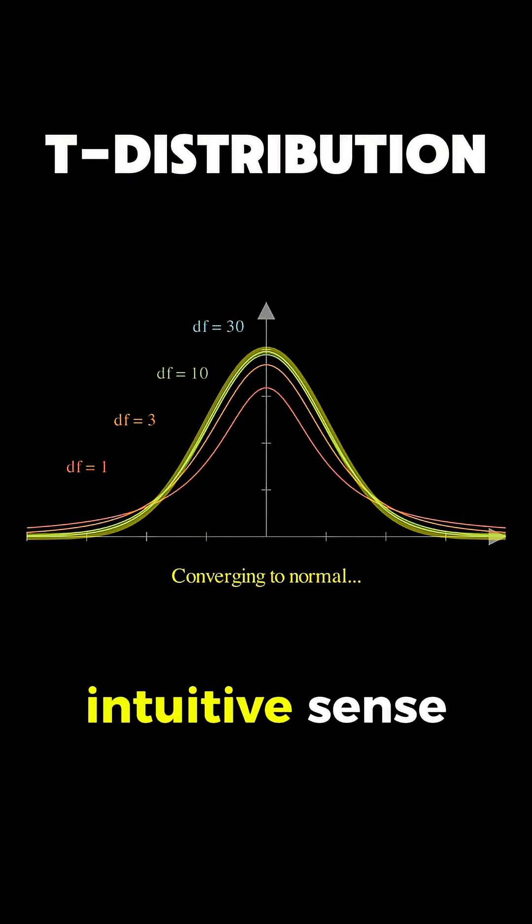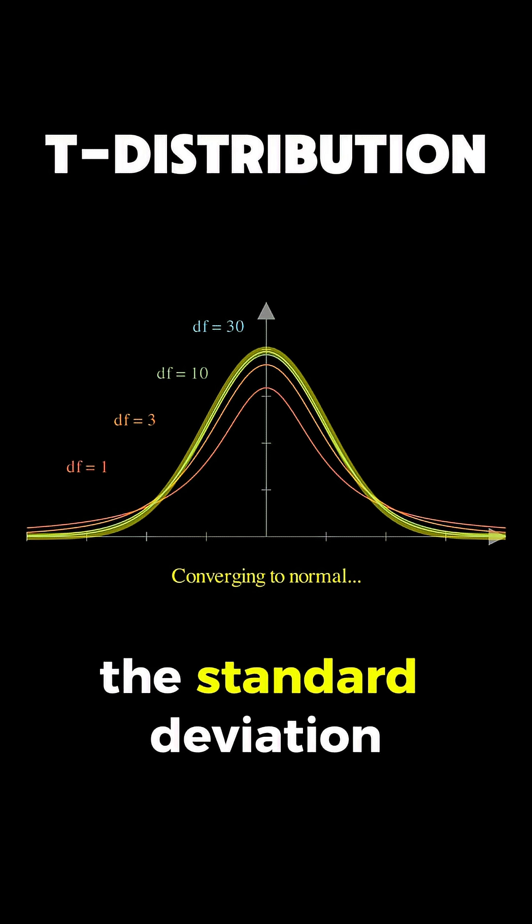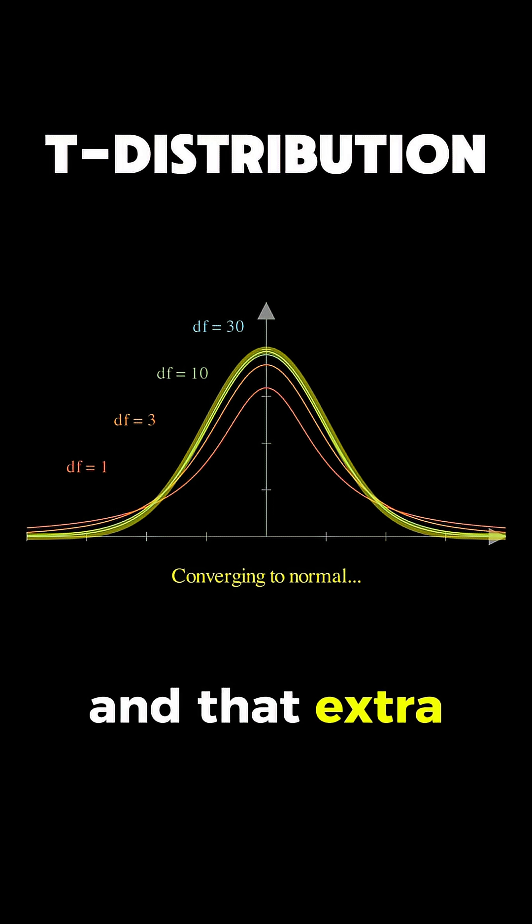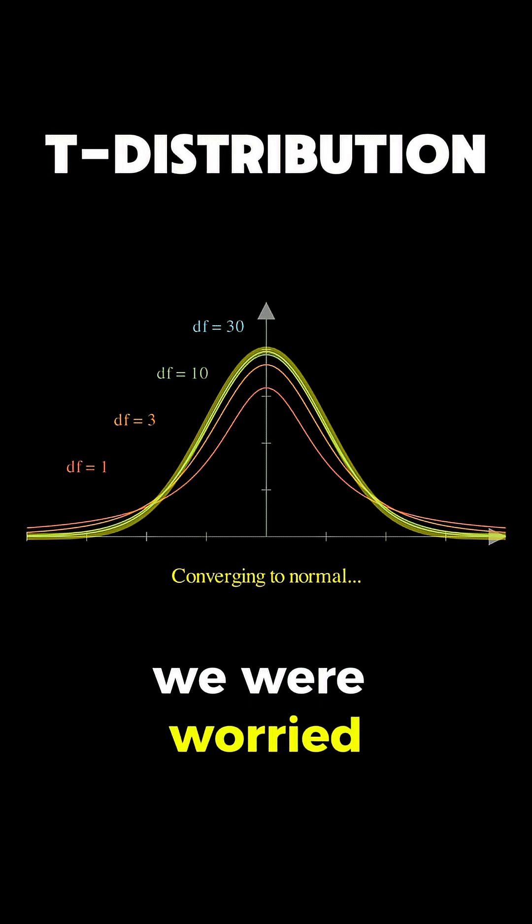This makes intuitive sense because with a larger sample, your estimate of the standard deviation becomes more accurate, and that extra uncertainty we were worried about becomes less and less important.